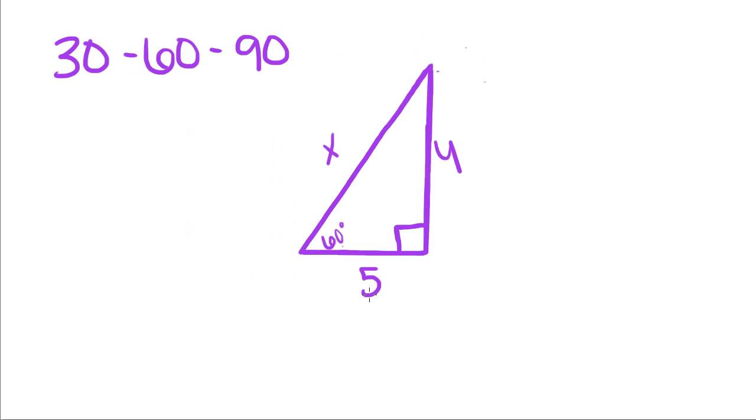We know that this side is equal to 5. So that means this angle is 30 degrees. So the side opposite the 30 degree angle is 5.